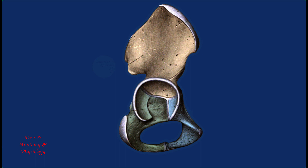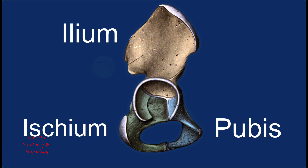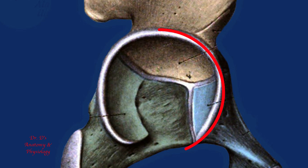This video is the third in a hip bone trilogy and describes the pubis and ischium. Three bones fuse to form the hip bone. The ilium is superior and was described in a previous video. The pubis is the anterior bone and the ischium is the posterior bone. The important structure that all three bones contribute to is the socket of the hip joint, also known as the acetabulum.